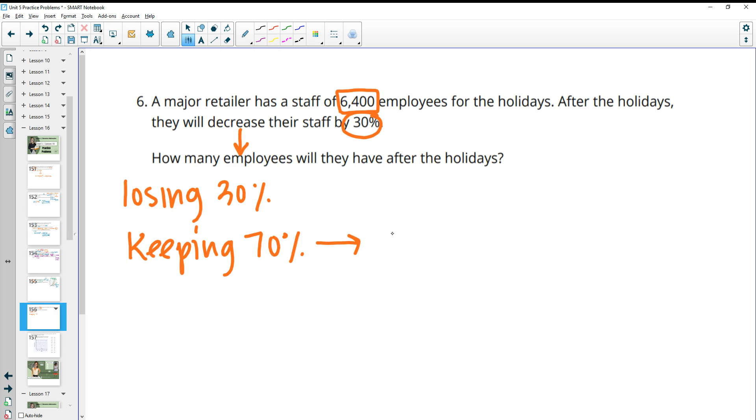If they are losing 30%, that means they're keeping 70% because that totals 100%. So that means we could think about it like this, 6,400 times 0.7, 70% as a decimal. And that would tell us how many employees they will be keeping, which is 4,480.